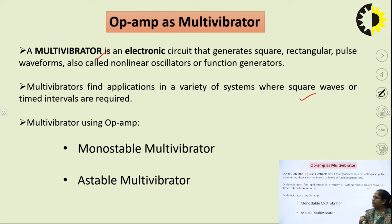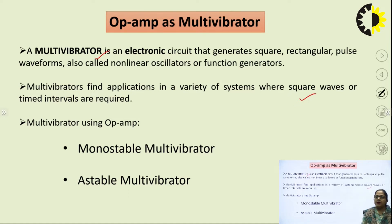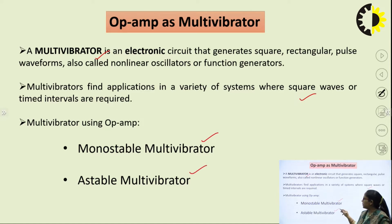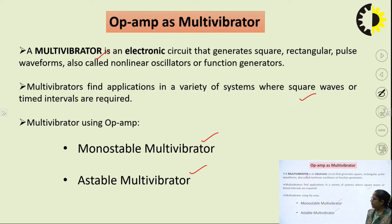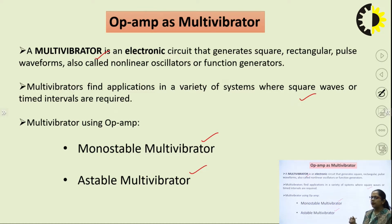Multivibrators are basically of three types: astable, monostable, and bistable. But in the syllabus of Integrated Circuits, we study two types: monostable multivibrator and astable multivibrator. In today's video lecture, we are going to discuss the monostable multivibrator in detail.